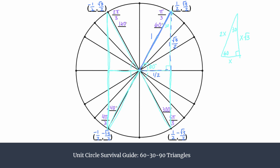We learn our unit circle so we can find exact values for these angles. For example, to find the cosine of 60 degrees — that's just a ratio of triangle sides, adjacent over hypotenuse, from SOHCAHTOA. The adjacent side of our 60-degree angle is one half, over the hypotenuse of one, so cosine of 60° is one half. That's why the unit circle is well-designed: with hypotenuse one, the x-coordinate is the cosine.